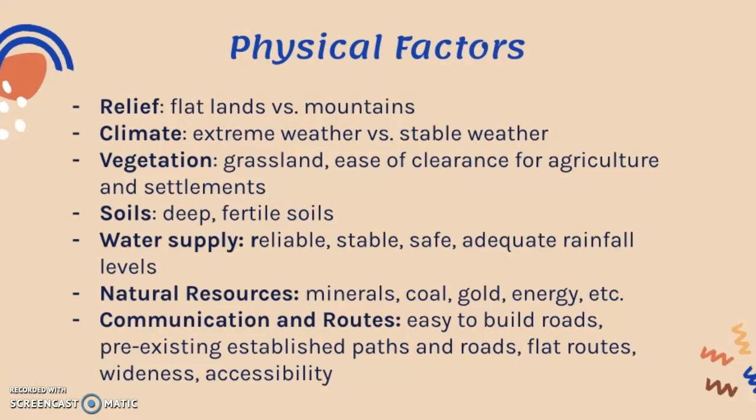Climate links to agriculture and the ease of cultivating crops. Vegetation is important because you want grassland and ease of clearance for agriculture, settlements, and building infrastructure — you need to be able to clear the land to live there. Then there's soils: you need deep and fertile soils in order to have stable and productive agriculture.